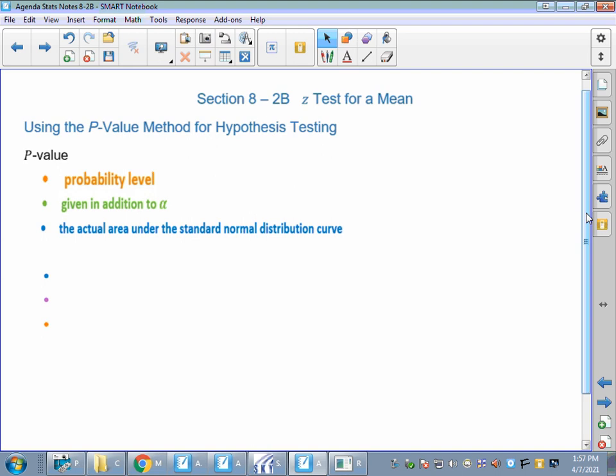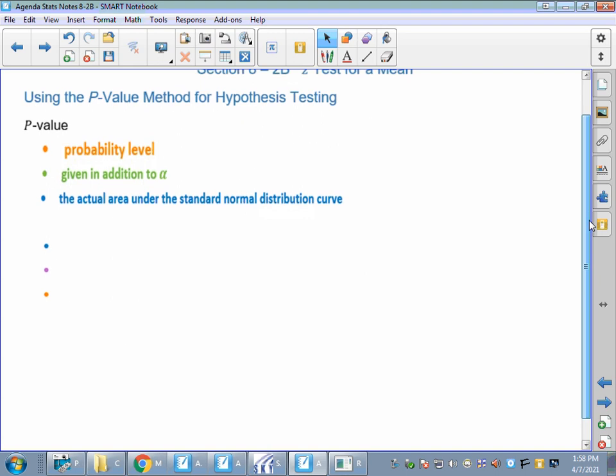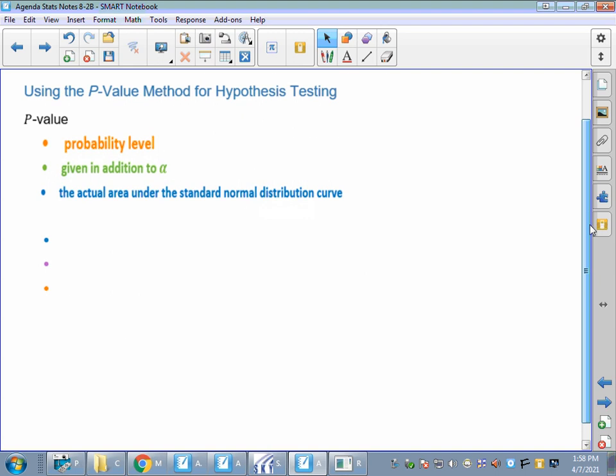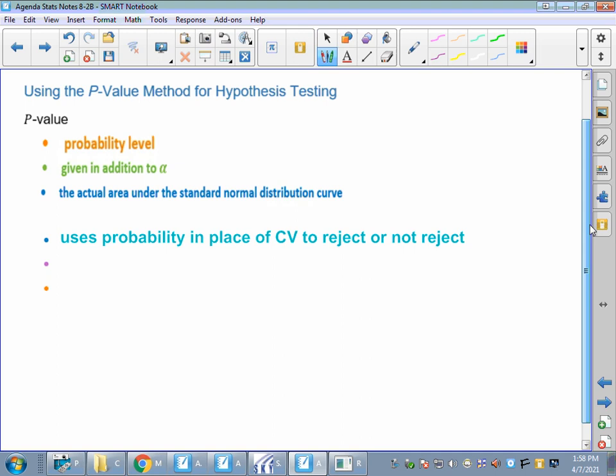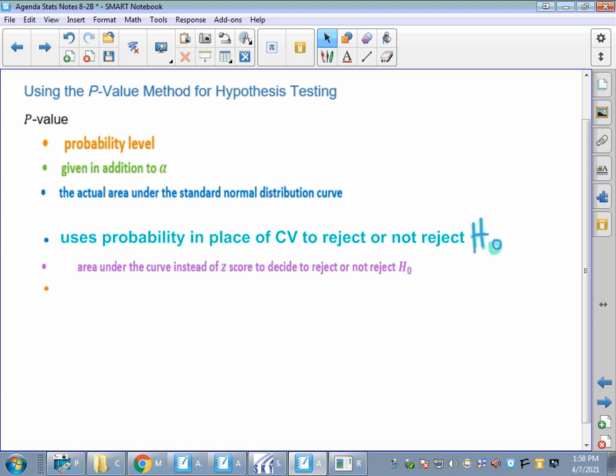A p-value is the actual area underneath the curve. Instead of figuring out that critical value line that separates the shaded and the non-shaded, we're going to look at where is the shaded area underneath that curve. This uses probability in place of the critical value to reject or not reject H sub O. All of the same things come into play. Steps 4 and 5 are still going to be the same, but we're just going to get to them a little bit differently. We use our area under the curve instead of that z-score or the CV.